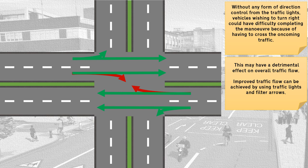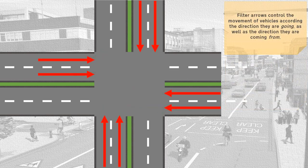Improved traffic flow can be achieved by using traffic lights and filter arrows. Filter arrows control the movement of vehicles according to the direction they are going, as well as the direction they are coming from.